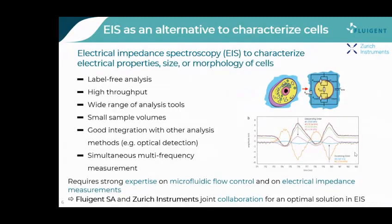EIS can be a great tool in cell research. Compared to other traditional methods, it is a label-free technique that enables real-time high-throughput measurements. It provides a wide range of analysis tools and requires only a small sample volume. It also integrates well with other methods, including optical detection. Moreover, EIS allows for multiple parameter analysis in a single experiment, for instance probing impedance of the analyte at multiple frequencies simultaneously. To achieve EIS characterization in microfluidics, however, requires strong expertise on both microfluidic flow control and electrical impedance measurements. Therefore, Fluidgent and Zurich Instruments have joined in collaboration for an optimal solution.